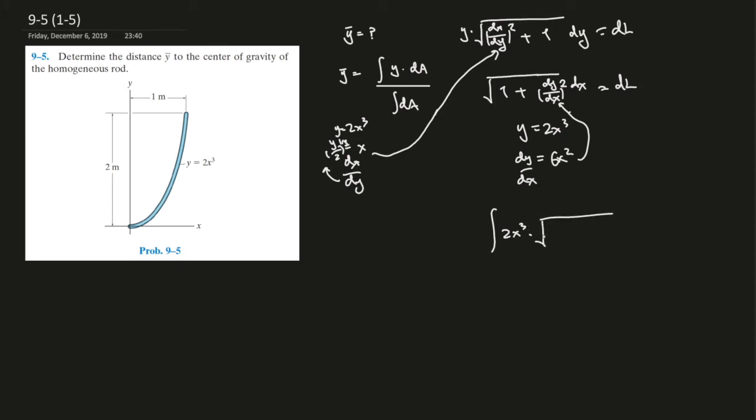Times the square root of 1 plus—so the square of 6x squared is 36x to the power of 4—dx. Which is great because we have everything in terms of x.